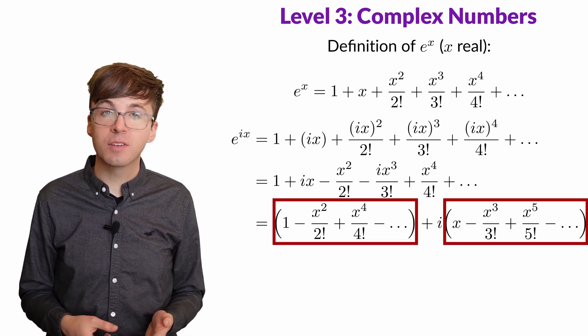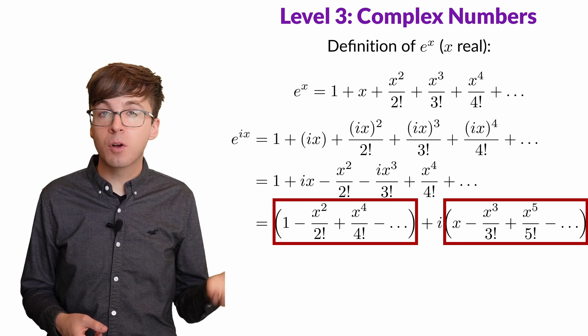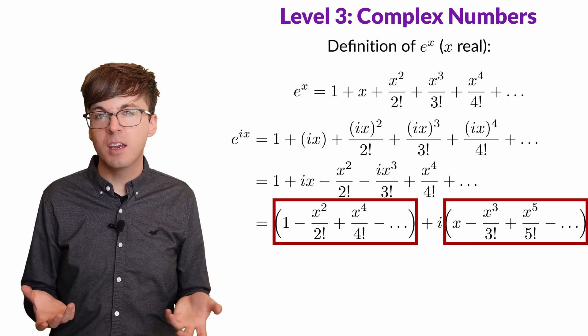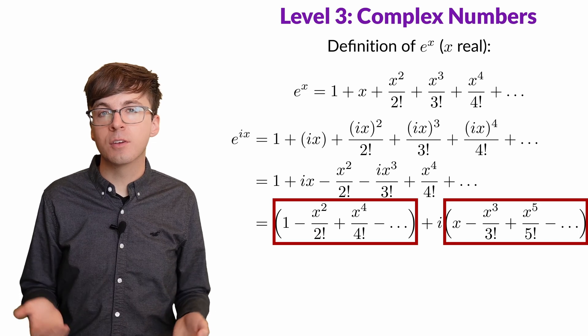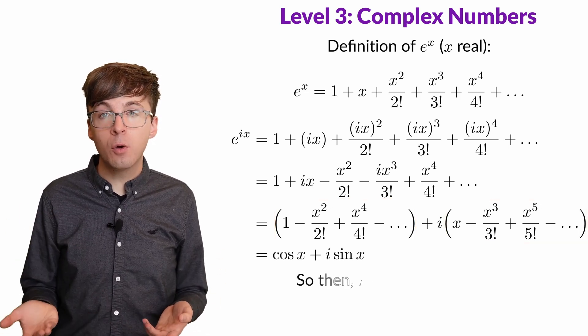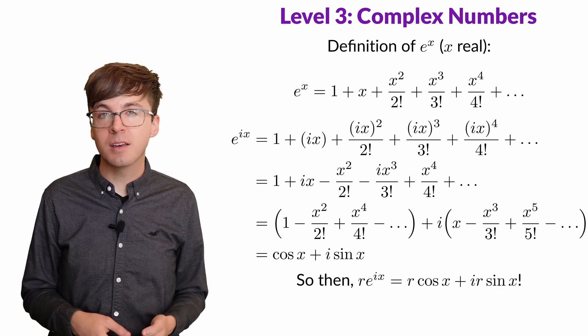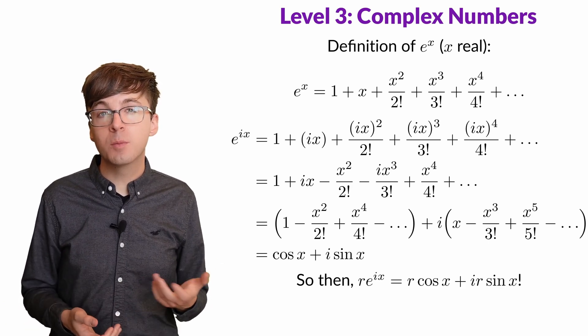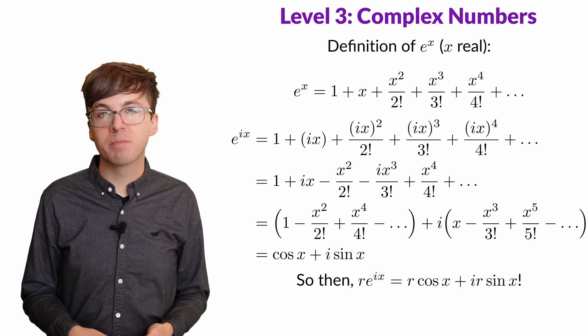These might look familiar from calculus. They're the Maclaurin series for cos(x) and sin(x). In other words, the Taylor series centered at zero. So now we have e^(ix) equals cos(x) plus i·sin(x). We can multiply both sides by r to get Euler's formula.